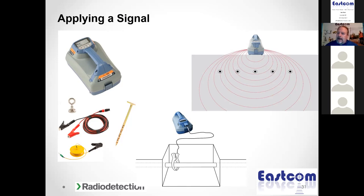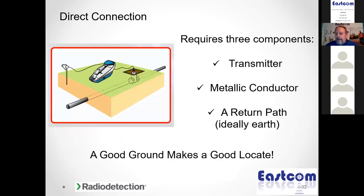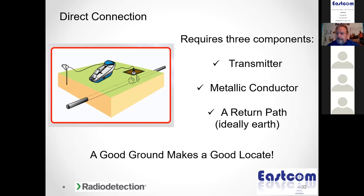Direct connect is conductive; induction clamp and induction antenna are inductive. Of these three methods, usually the best is direct connection onto the utility — conductive. With direct connection we have three items: our transmitter, the conductor, and the earth as the return path of signal from the utility back to the ground spike, completing the circuit. Experienced locators may have noticed we get better signals in spring than late summer — that's because more moisture in the soil improves that return path.